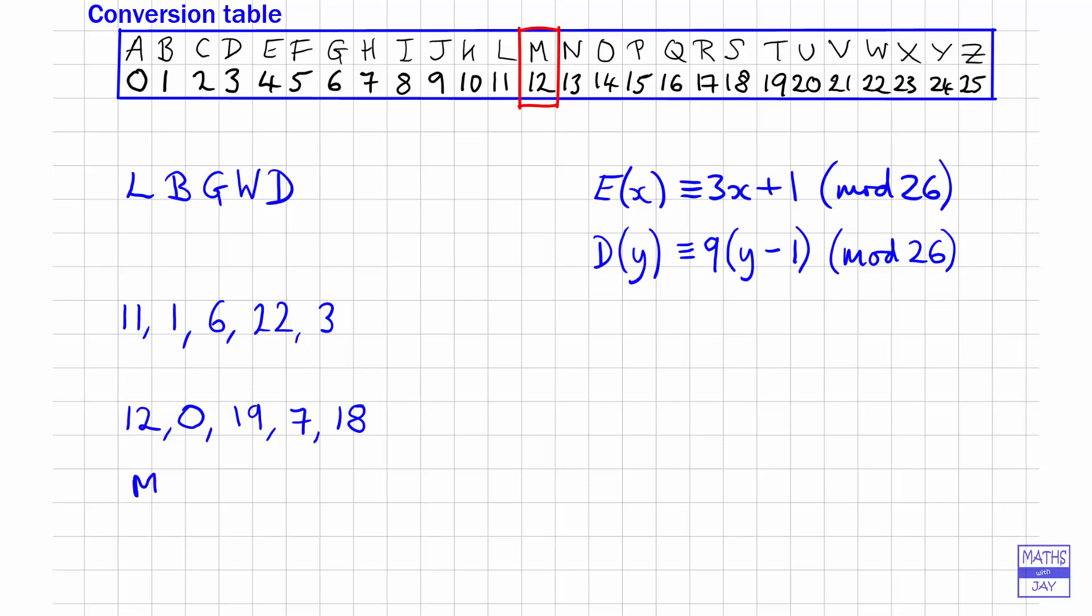So now looking at our conversion table, 12 is M, 0 is A, 19 is T, and 7 is H, and 18 finishes the word off for us.